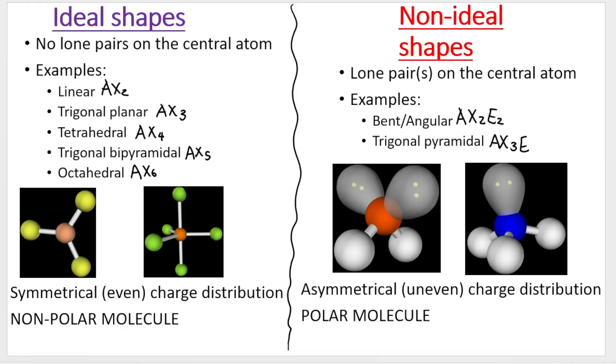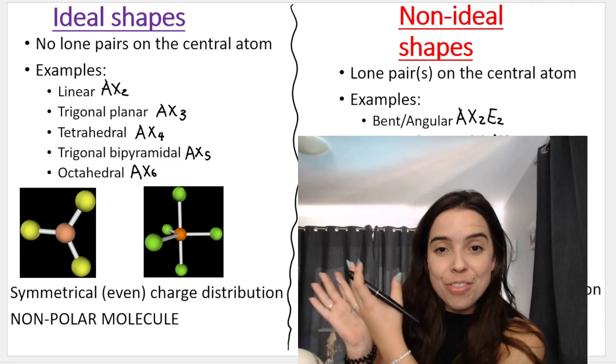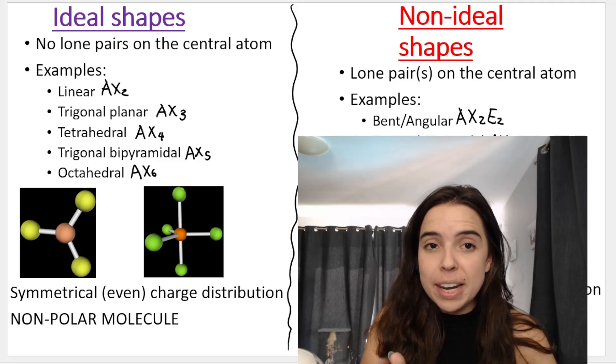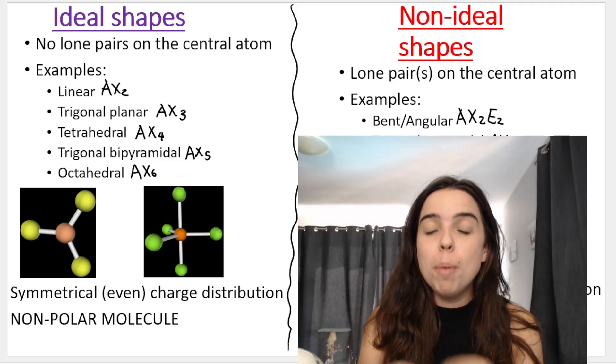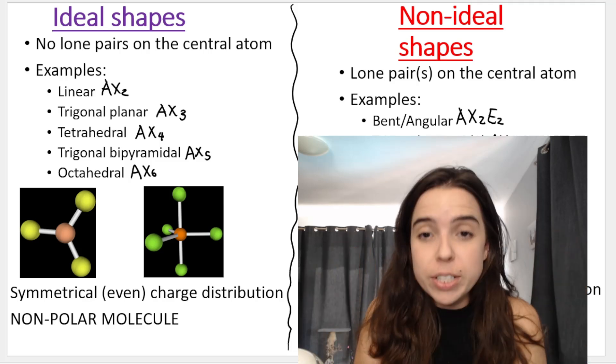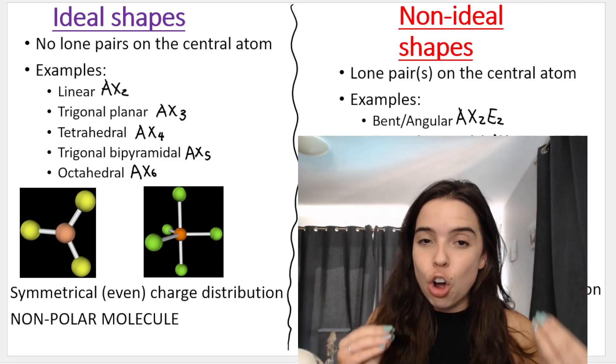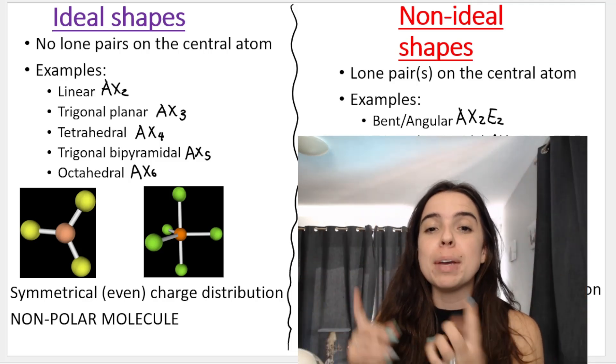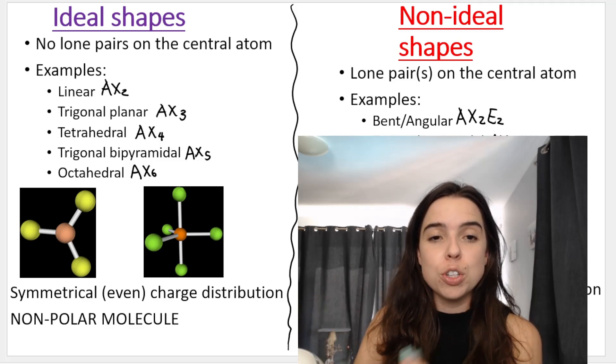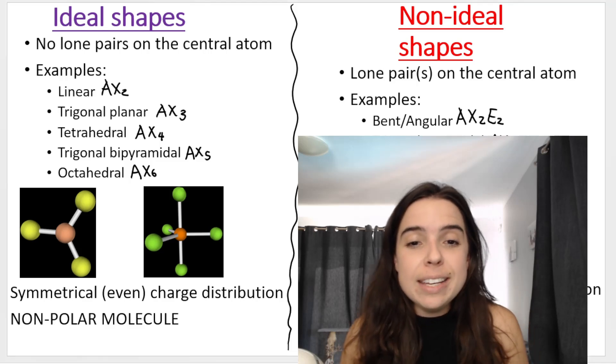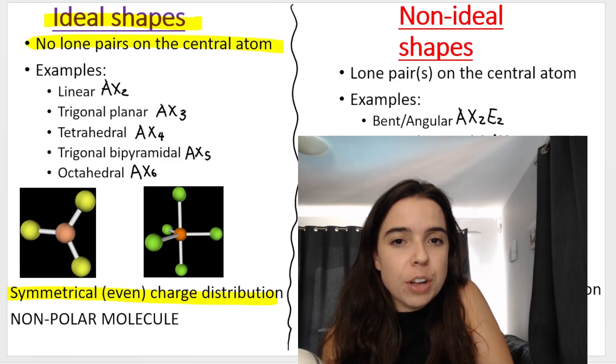If you have an ideal molecular shape, so if you are one of the five on the left hand side, if you have an ideal molecular shape with no lone pairs on the central atom, then you most likely - there are always exceptions - but you most likely have a symmetrical or an even charge distribution, and this can contribute to you becoming a non-polar molecule. I do go over this in another video. But for now, we're just going to focus on symmetrical or even charge distribution.